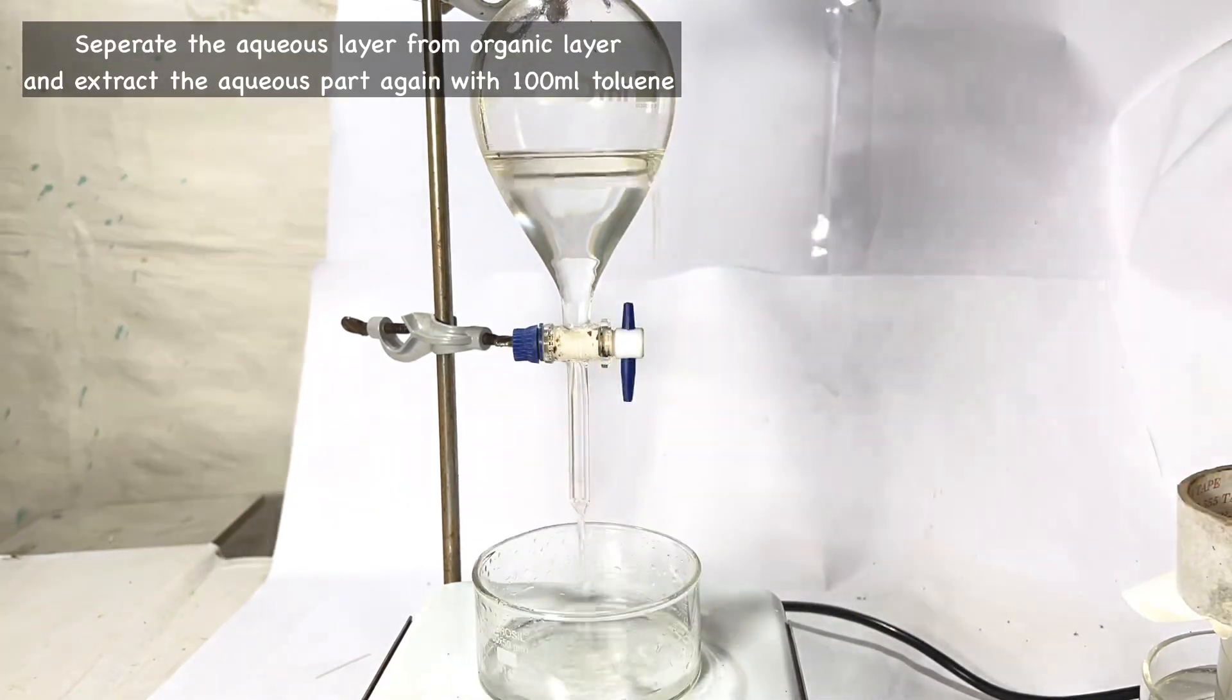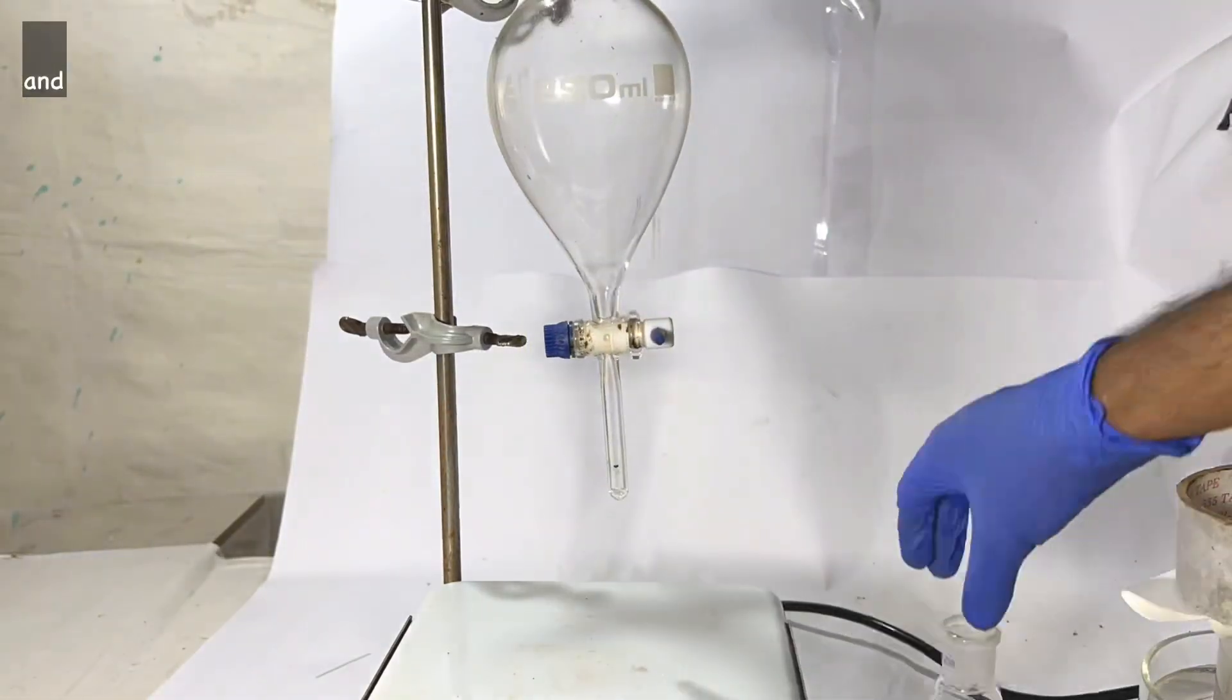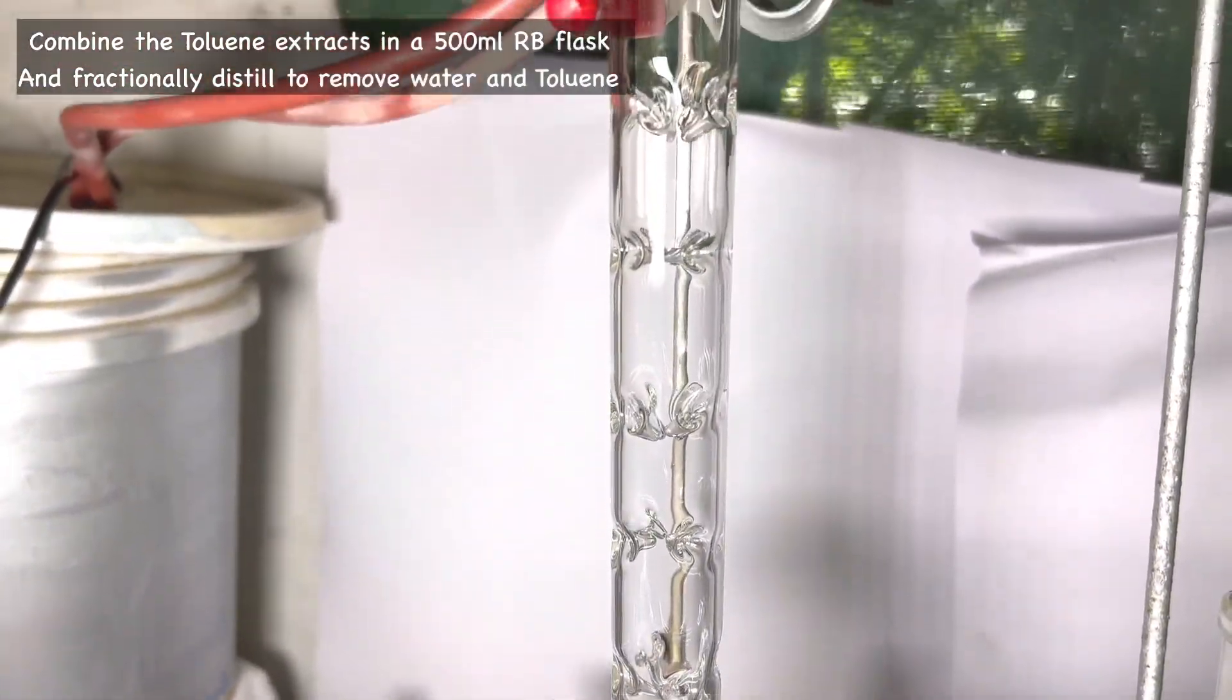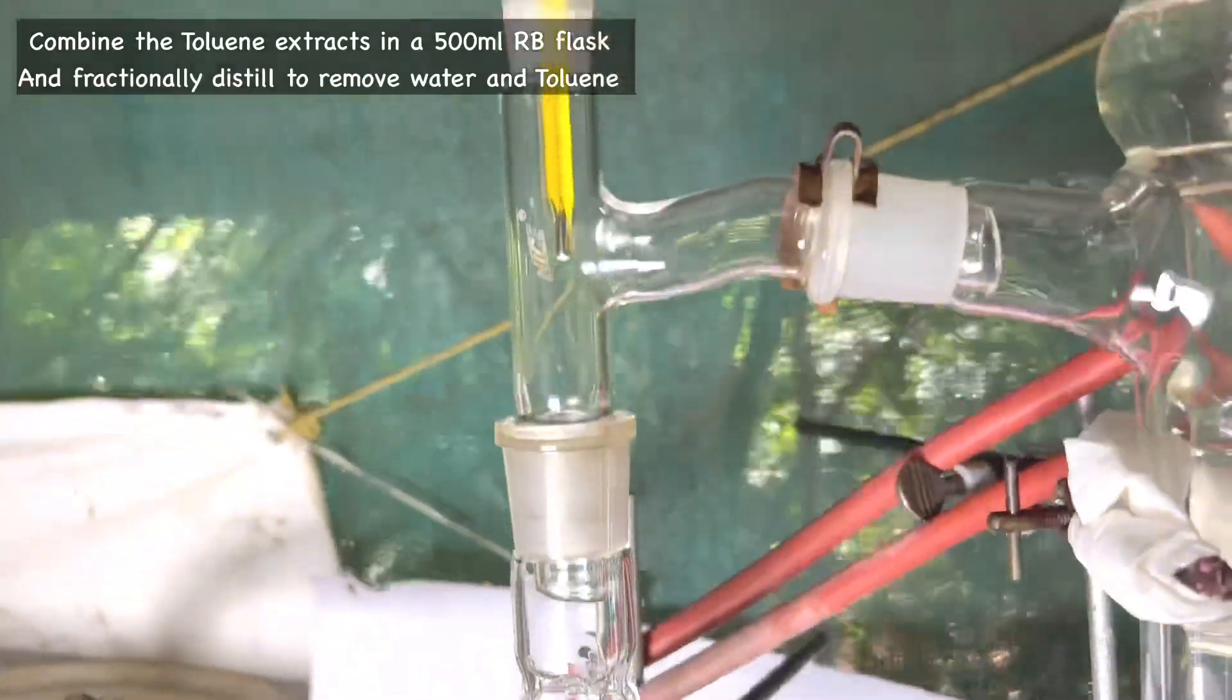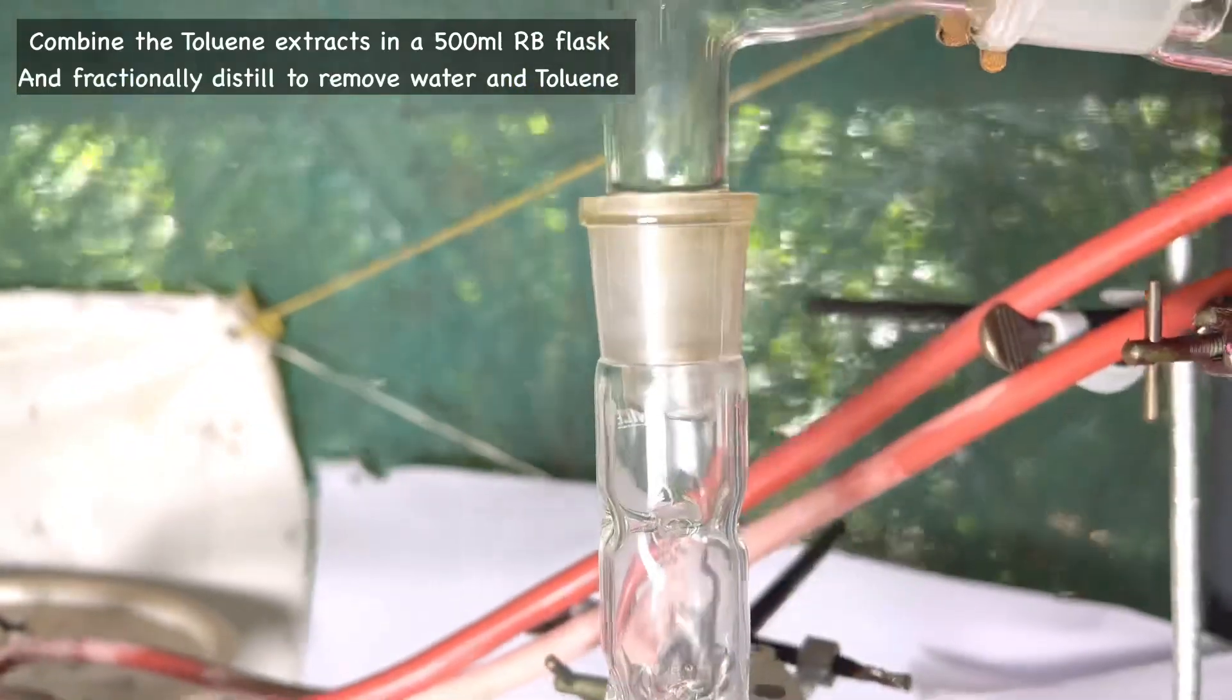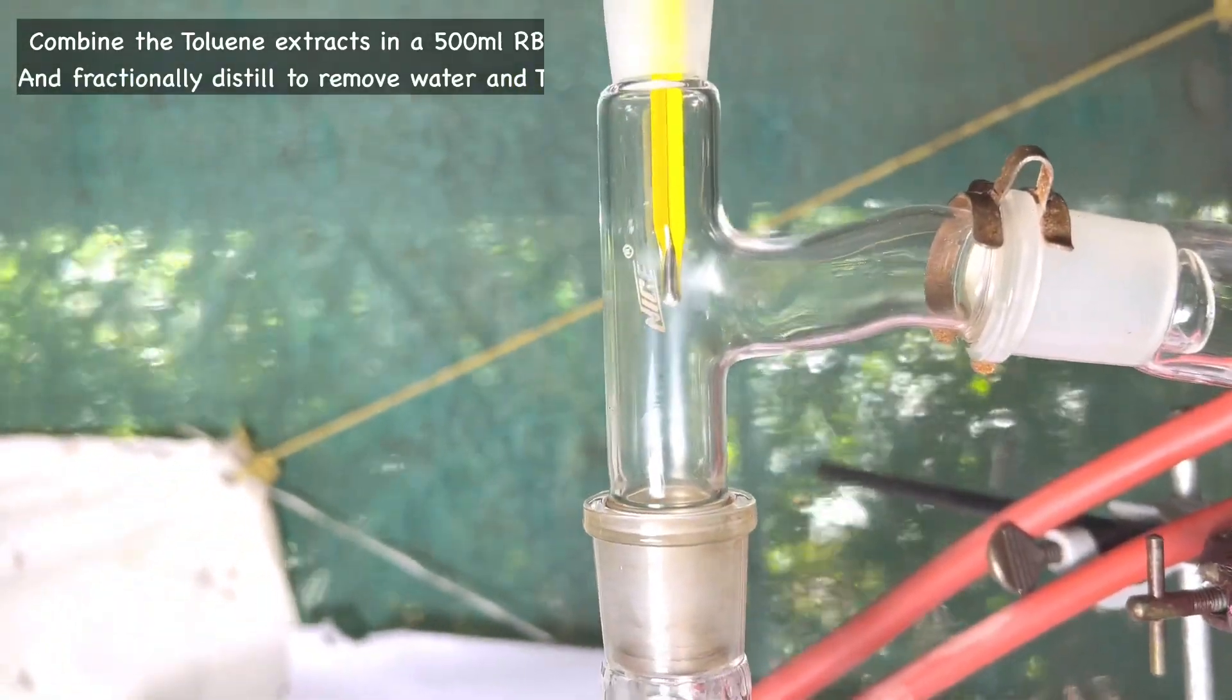Finally, the toluene extract was arranged for fractional distillation in order to recover the solvent toluene. The boiling point of toluene is 110 degrees Celsius and it tends to form an azeotrope with water if simple distillation was carried out.